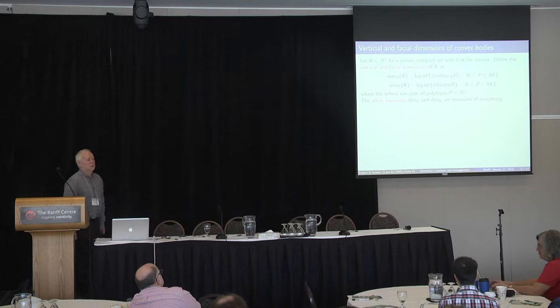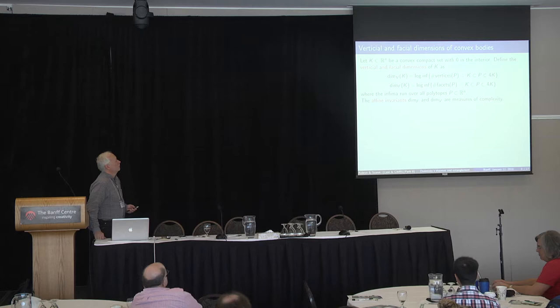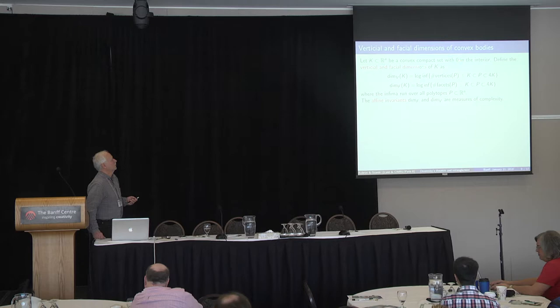We only want to approximate within a constant factor — the role of four is not that important, just for demonstrative purposes. Our polytope has to sit between: it's supposed to contain the convex body and be contained in four times the convex body.